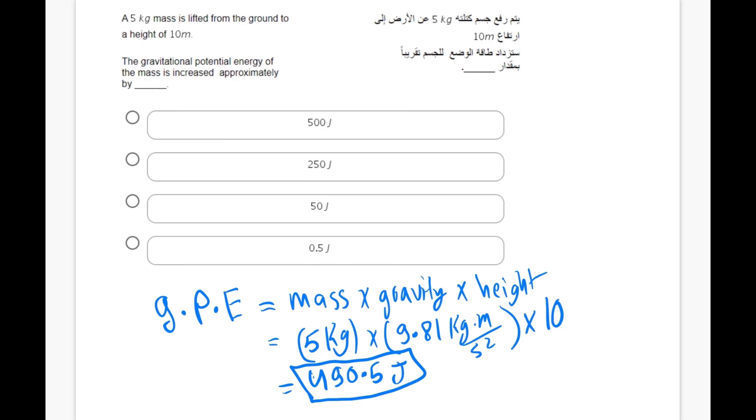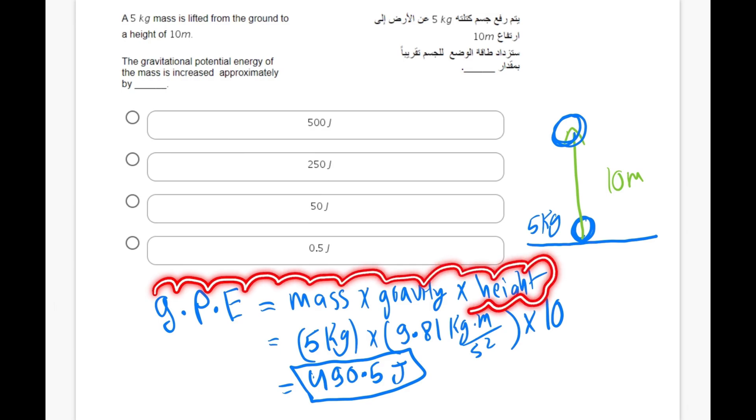So we have the gravitational potential energy for this current problem which is 490.5 joules. So how do we represent this graphically, in case you're confused how we went about this? So we have the following mass which is five kilograms, and we just simply picked up the mass to a certain height which is 10 meters. Now we need to know what is the stored gravitational potential energy going from this point all the way to this point. This is where we use the following formula: gravitational potential energy equals to the mass times gravity times height.